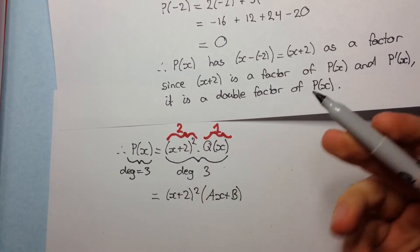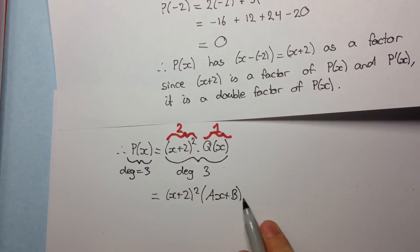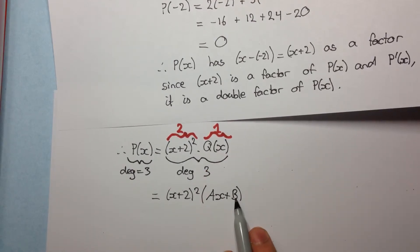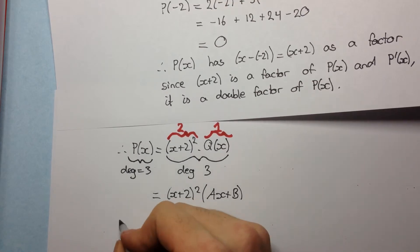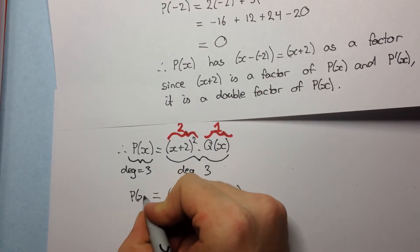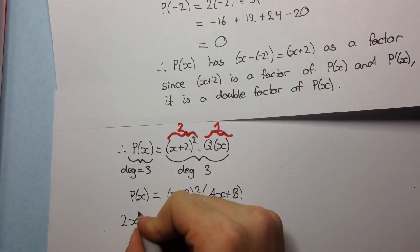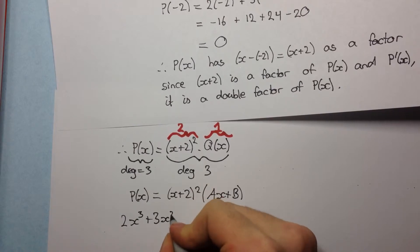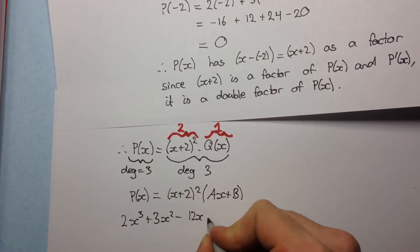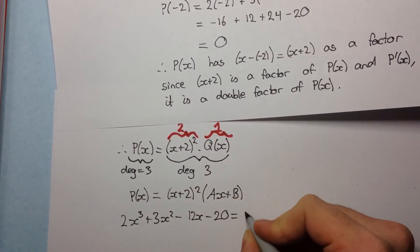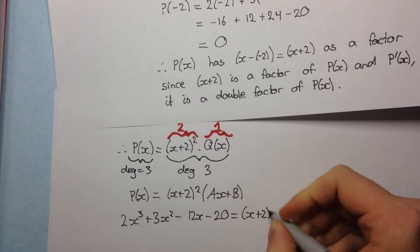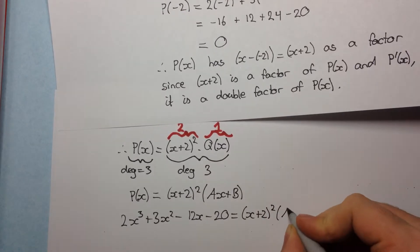Now if this was a degree of 2, we would write Ax² + Bx + C. If it was degree of 3, we'd do the same thing, and so on. But since it's a degree of 1, we just write the general linear equation. So now that's equal to P(x). Now if we write what the value of P(x) is, we get this.